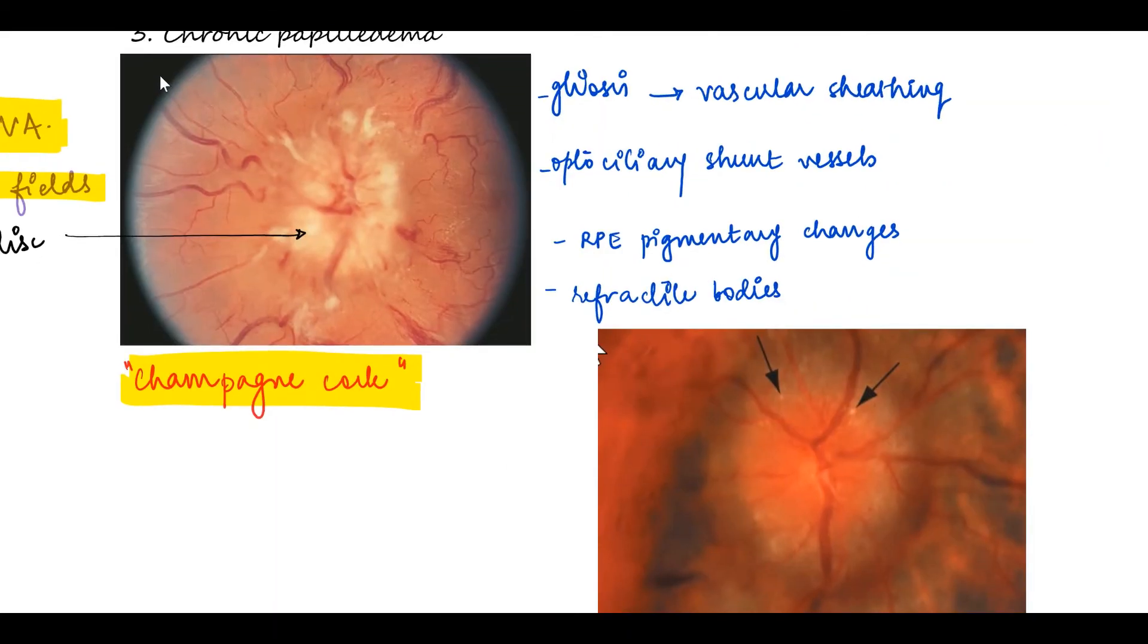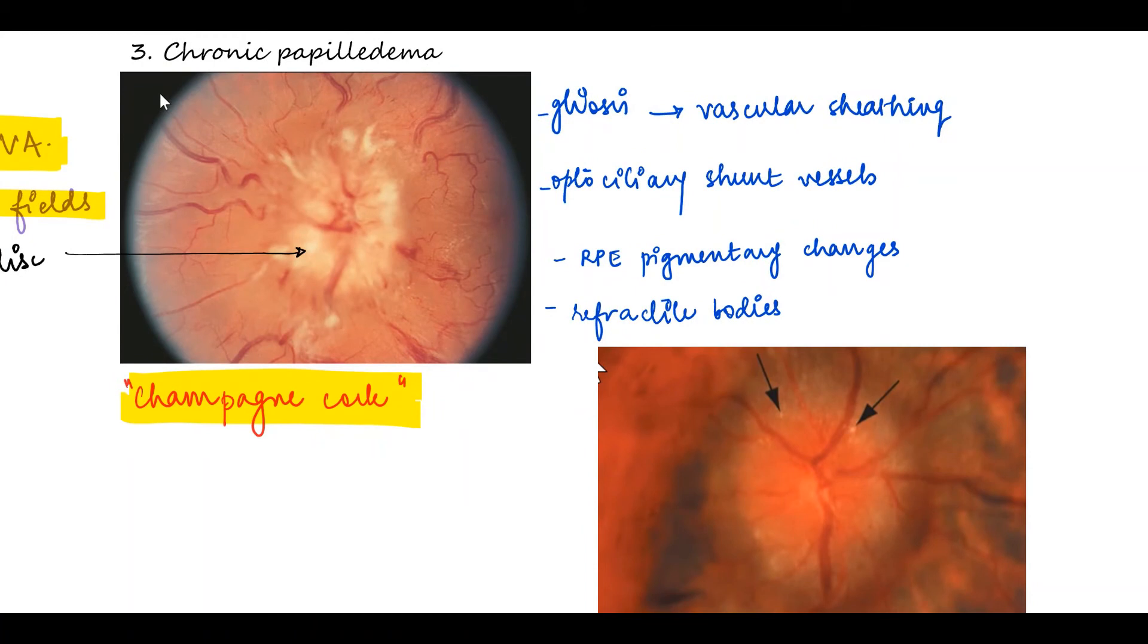In this stage, gliosis sets in in the peripapillary nerve fiber layer and this is seen in the perivascular area leading to perivascular sheathing. One more finding is the optociliary shunt vessels that dilate here. These are pre-existing channels that dilate when the intracranial pressure is high. There is an obstruction to the central retinal vein at the disc because of the disc swelling, because of which these shunt vessels dilate.